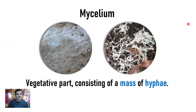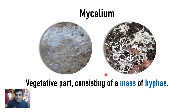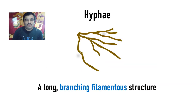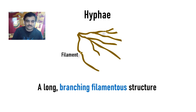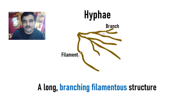Mycelium basically is the vegetative part consisting of a mass of hyphae. We can observe filamentous structures like this. Hyphae are the long branching filamentous structures which are seen in fungi — they are filamentous in nature. We can see the long thread-like structure, and they also branch in a predefined manner.